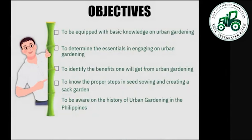The objectives are: to be equipped with basic knowledge on urban gardening, to determine the essentials in engaging in urban gardening, to identify the benefits one will get from urban gardening, and to know the proper steps of seed sowing and creating a sack garden, as well as to be aware of the history of urban gardening.